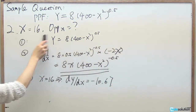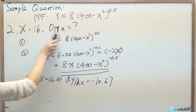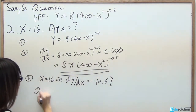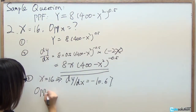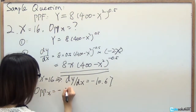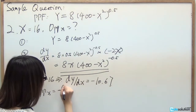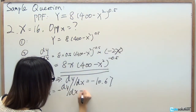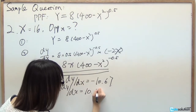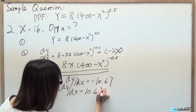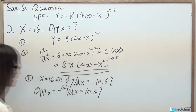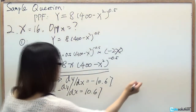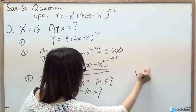Since the opportunity cost of X equals negative dY/dX, the opportunity cost of X equals 10.67. The answer for the second question is H.